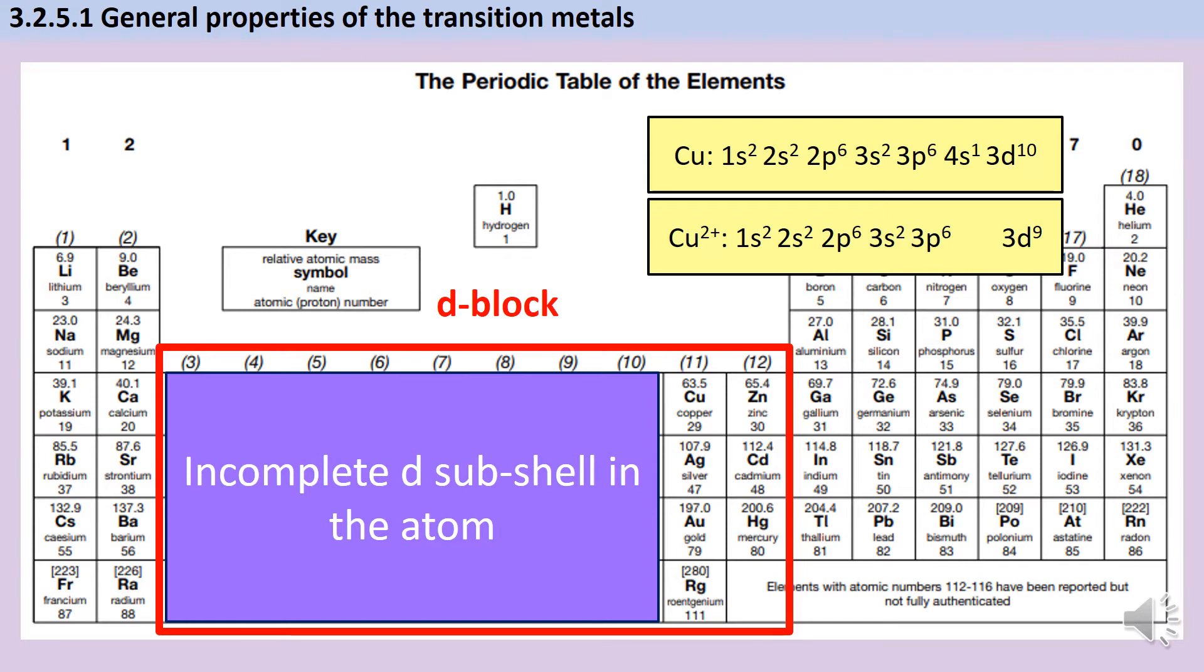When we look at zinc and the rest of that group, even when they start forming ions, they lose the electrons in their 4s subshell but they don't lose the electrons from the d subshell. Therefore this last bit of that d-block, they are not transition metals. When we start to look at the various properties of transition metals, we'll find that things like zinc are actually very different from the rest of that group.